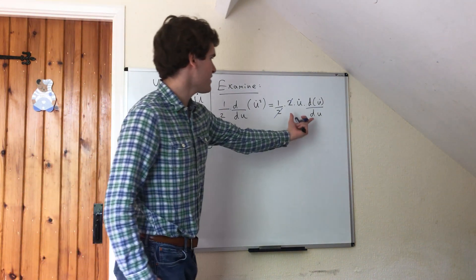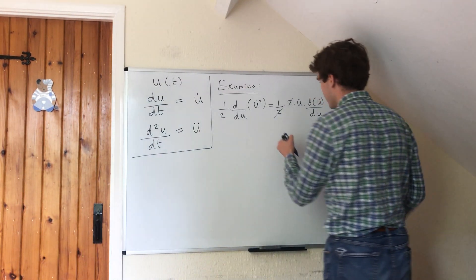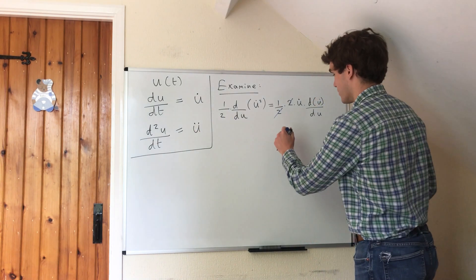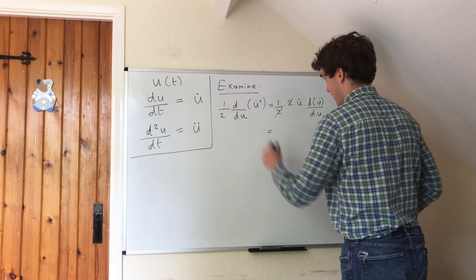What is this? Remember that u dot is just du by dt. So we have a half... well, we don't have a half, the half is gone.